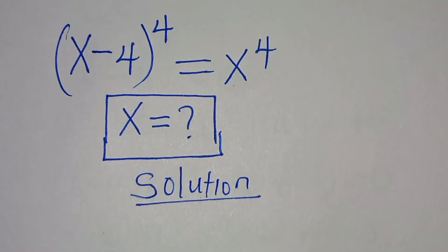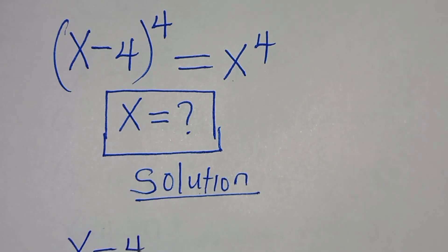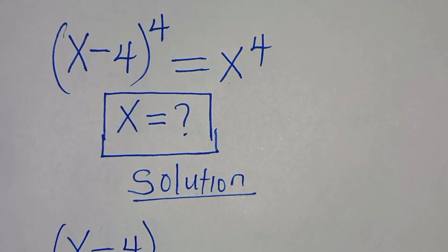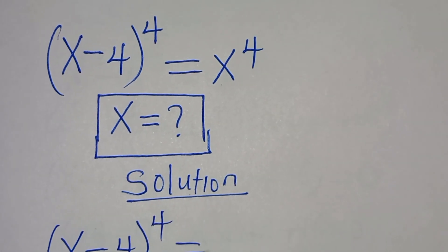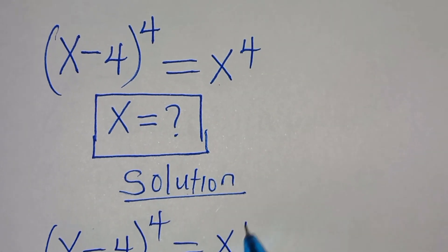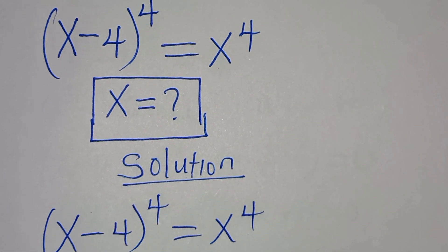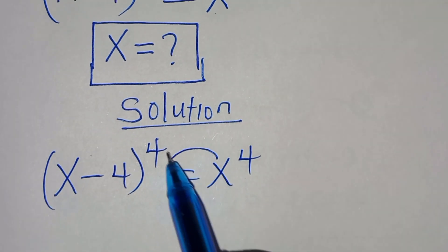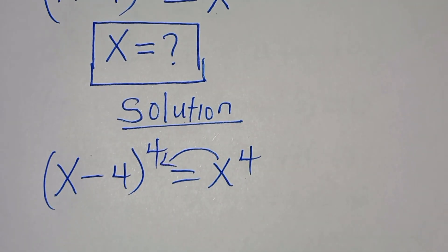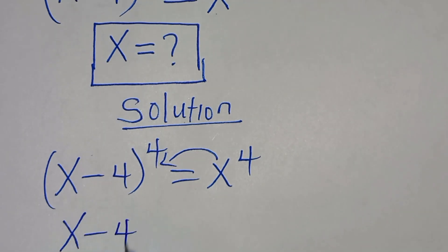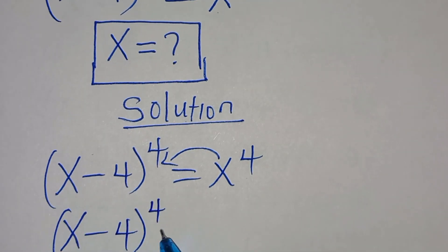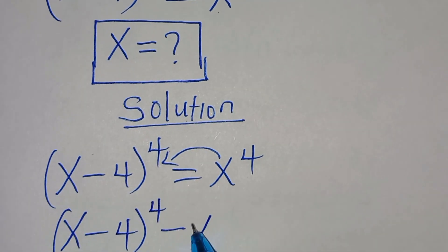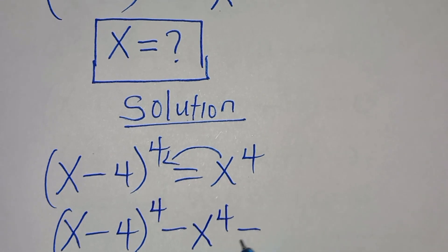We have (x subtract 4) to the power of 4, this is equal to x to the power of 4. The first step is to take x to the power of 4 on the left-hand side, so that we have (x minus 4) to the power of 4 subtract x to the power of 4 equals 0.